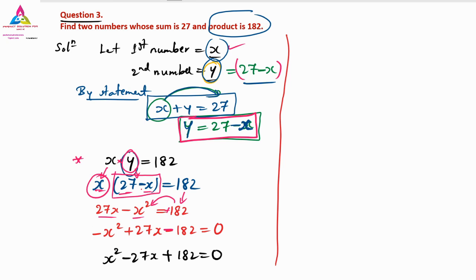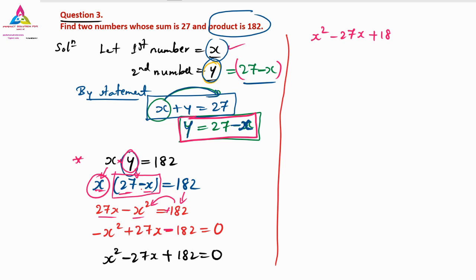Now the next step is splitting the middle term. We have X squared minus 27X plus 182 equals 0. We need to split the middle term.